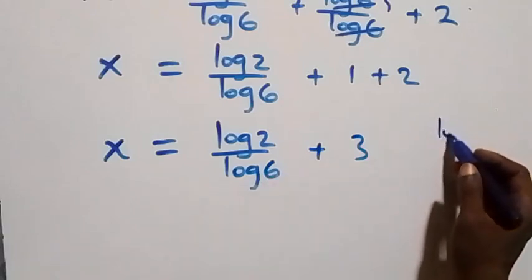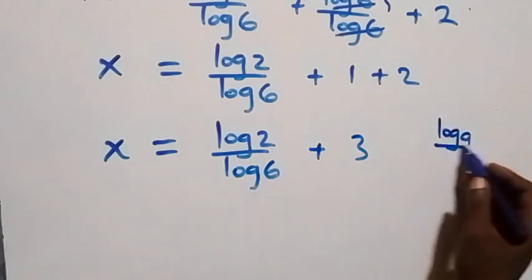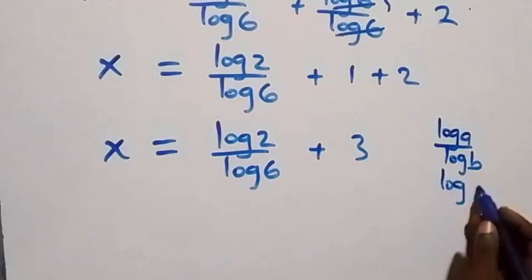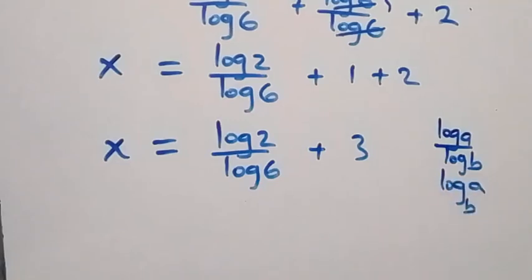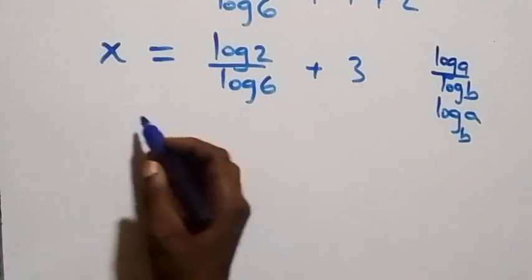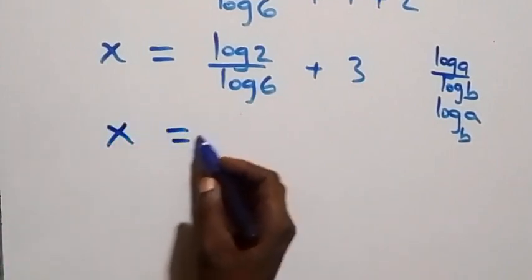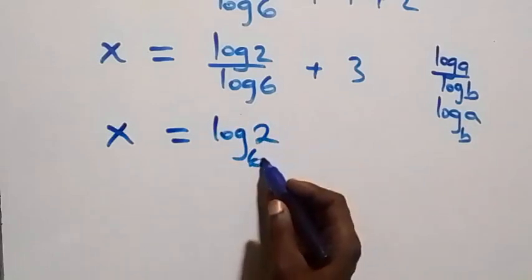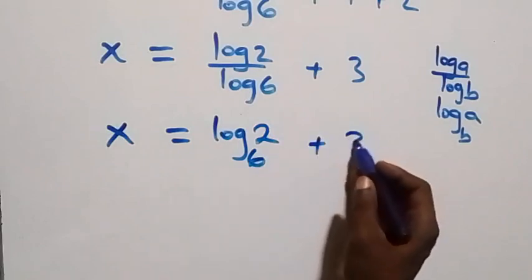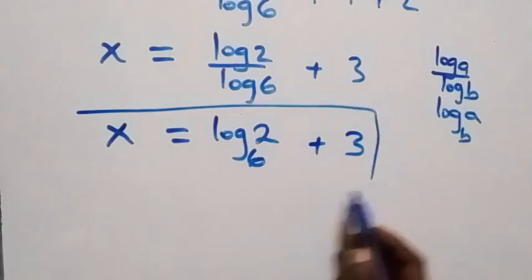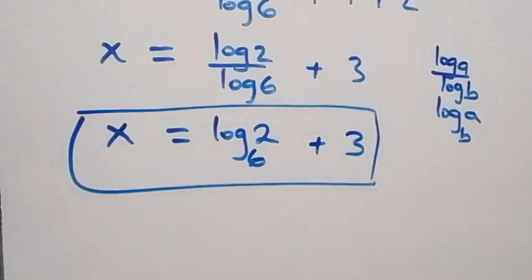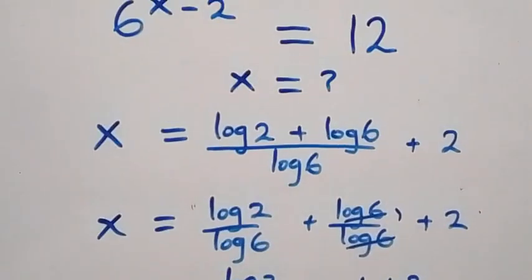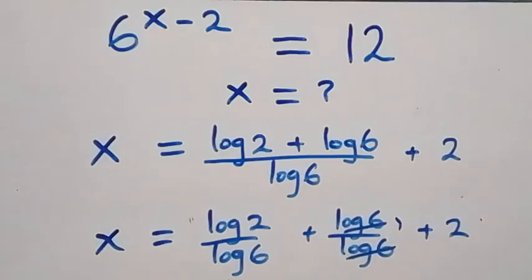Applying the change of base rule — log a over log b equals log a to base b — this becomes x equals log 2 to base 6, plus 3. So the value of x is x equals log 2 to base 6, plus 3.